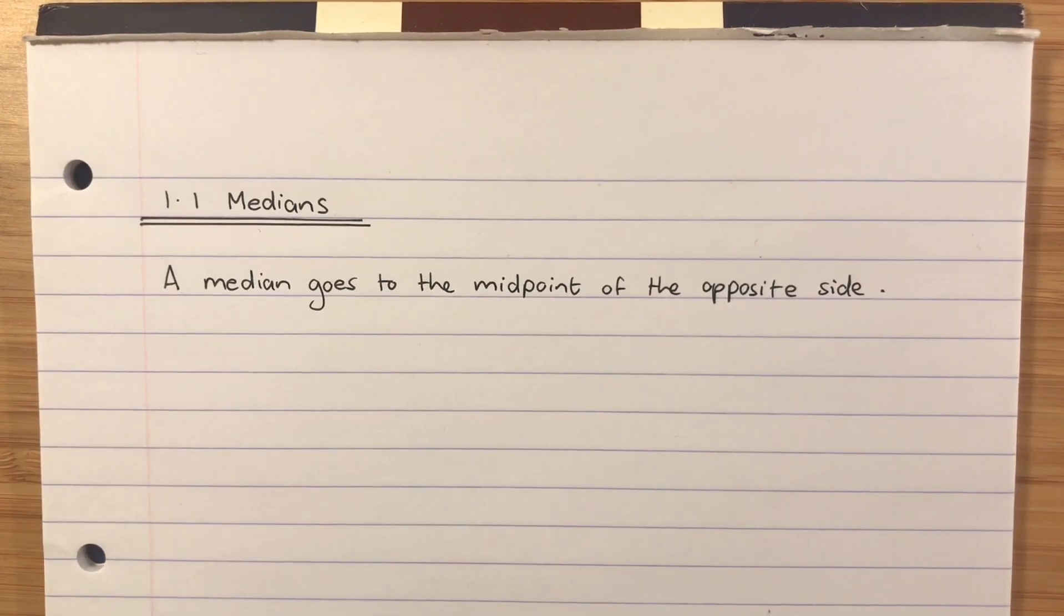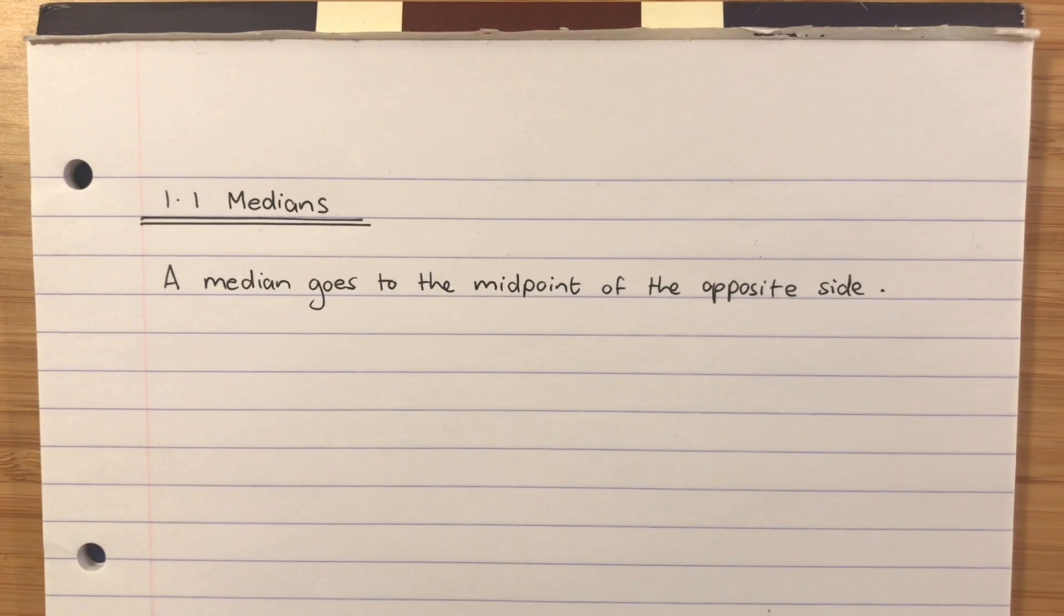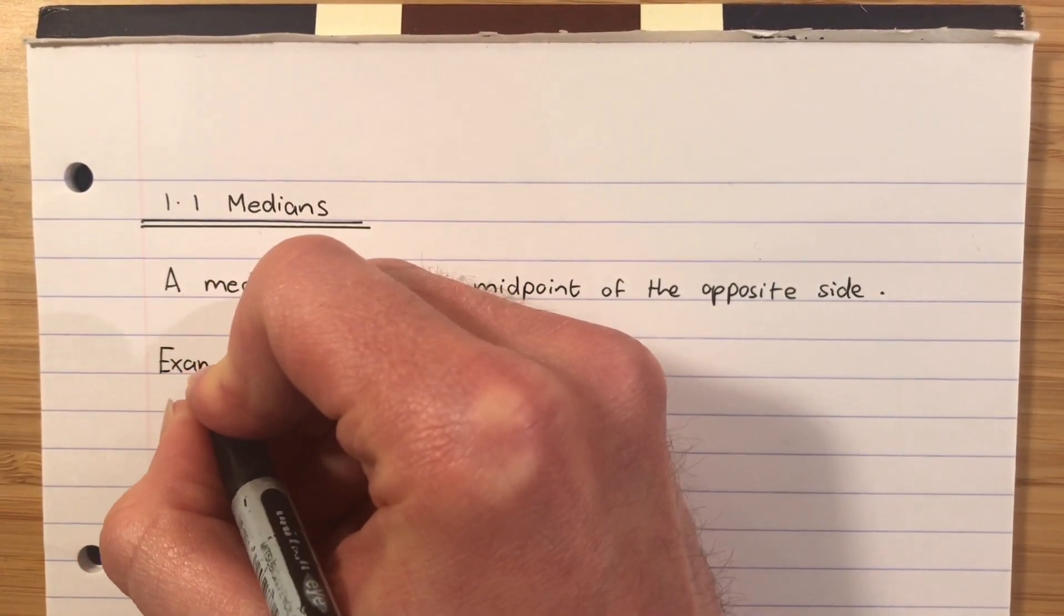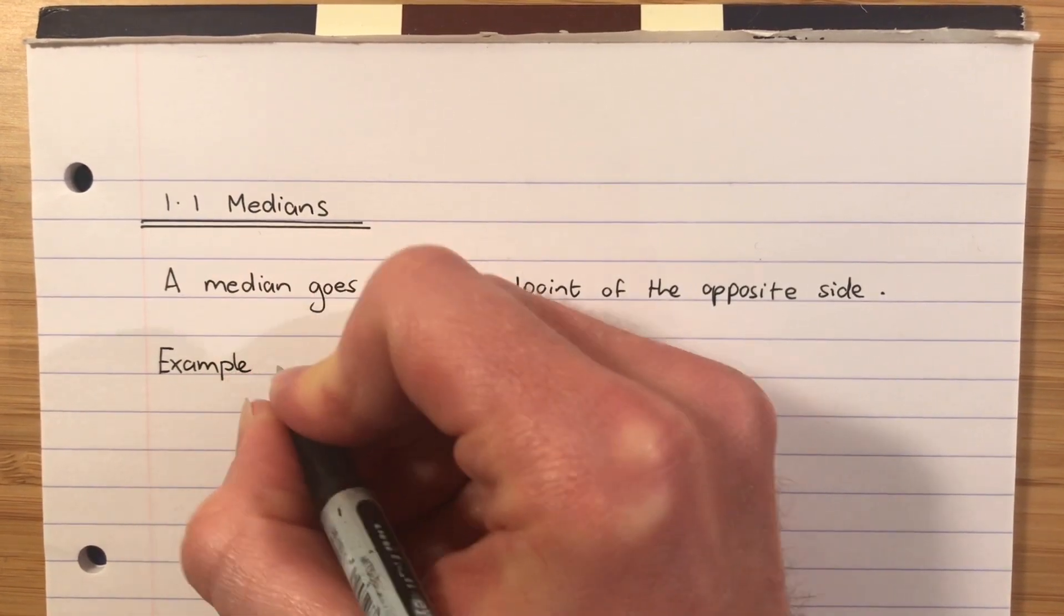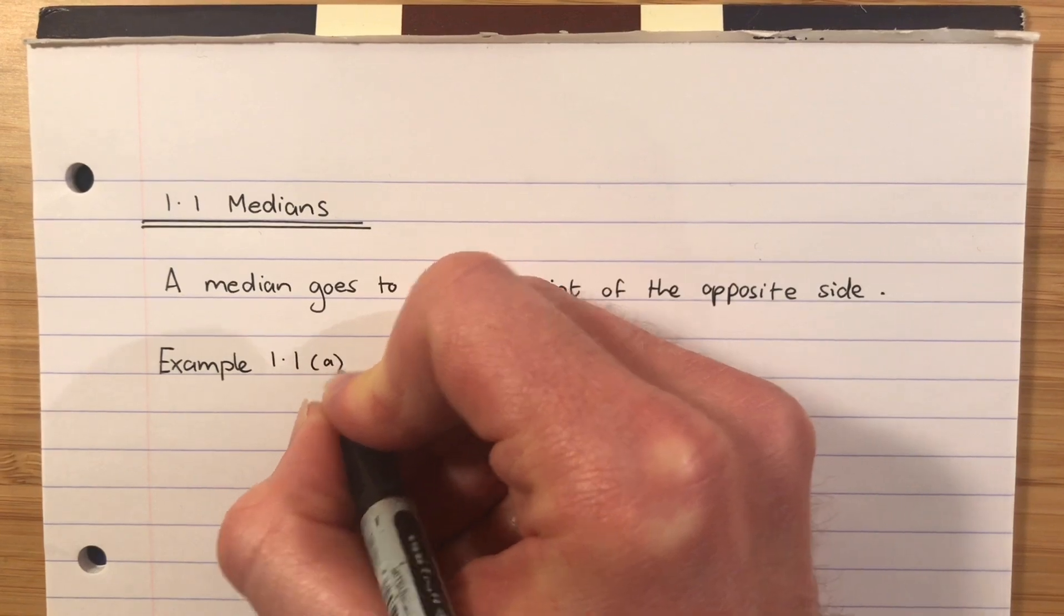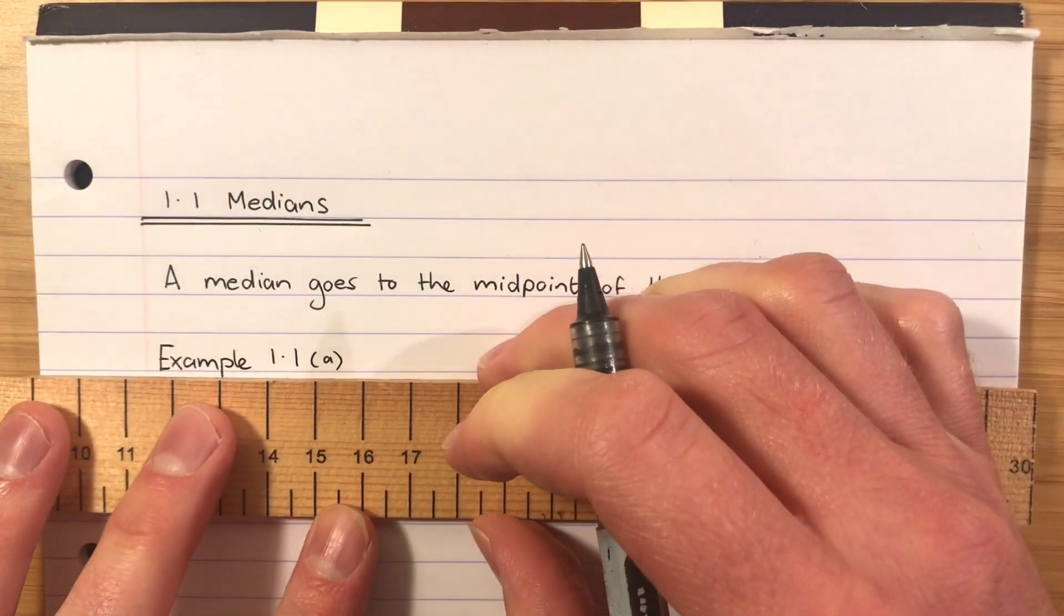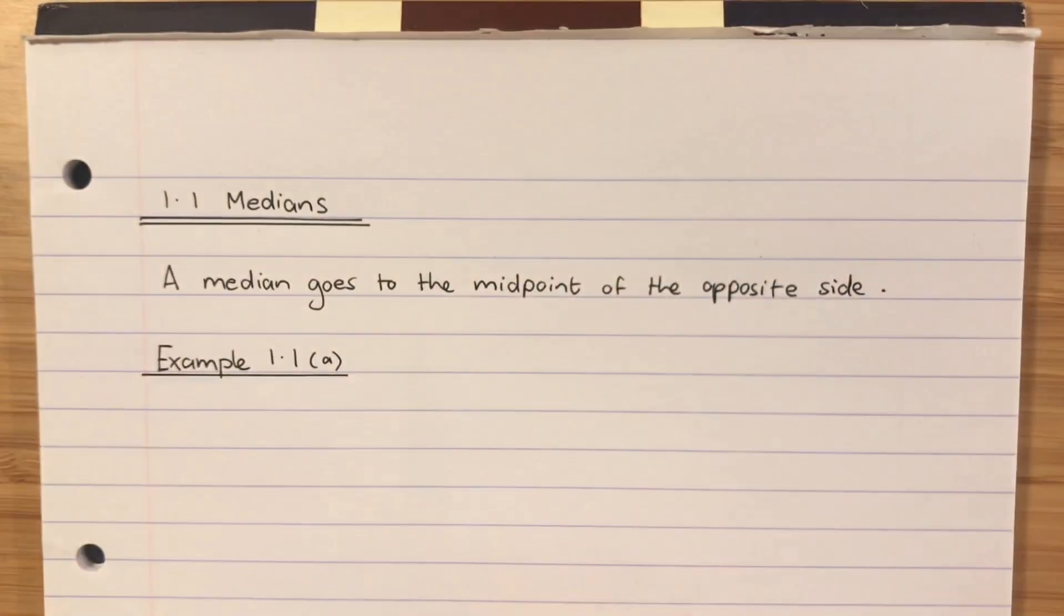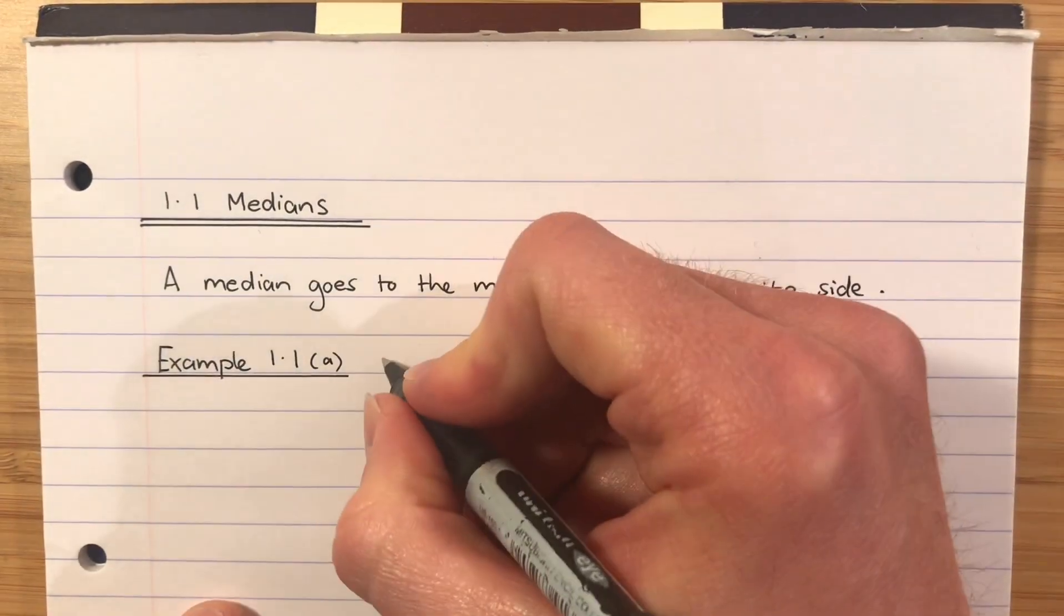The best way for me to demonstrate this to you is to just go straight into an example. I should point out that the numbering of these notes will correspond with your green booklet. So 1.1 will give you examples on medians, 1.2 on altitudes and so on and so forth. Example 1.1A is going to say this.